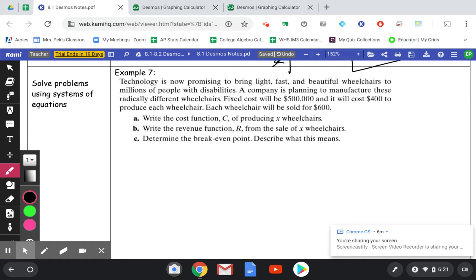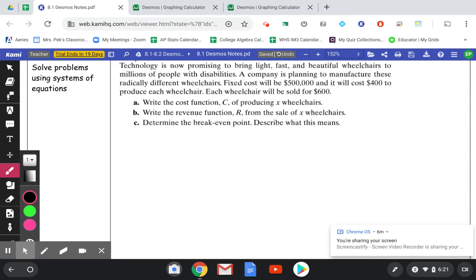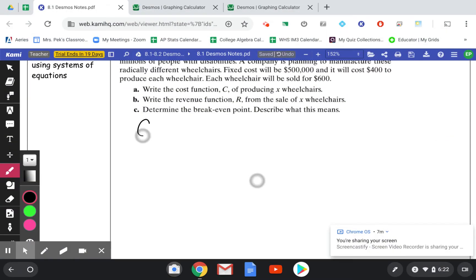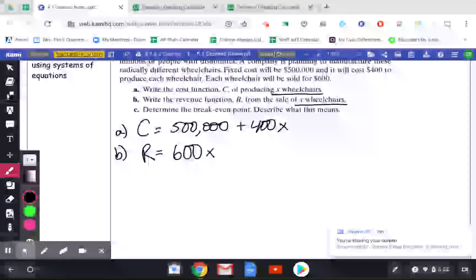Last example, we've got an application problem here. Technology is now promising to bring light, fast, and beautiful wheelchairs to millions of people with disabilities. A company is planning to manufacture these radically different wheelchairs. Fixed costs will be $500,000. And then it'll cost $400 to produce each wheelchair. Each wheelchair will then be sold for $600. So we want to write a cost function, C, producing x wheelchairs. So it's going to cost $500,000, a fixed cost, which means that's just never going to change. It's just there. Plus, it's going to cost $400 for each wheelchair sold. And x is the number of wheelchairs, it tells you right here. Then for part b, we want to write our revenue equation. And revenue is the amount of money we're going to make from selling the wheelchairs. So revenue is going to be $600 for each wheelchair. Again, x is the number of wheelchairs.